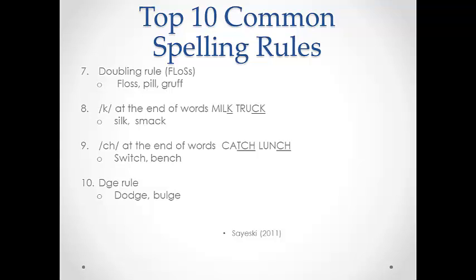Obviously, spelling rules are valuable for teaching children to spell words that follow these regular English rules. As was discussed in the video about C and G, just the rules associated with those two letters opened up understanding of thousands of words. So if we start by teaching children basic rules, we can improve their spelling immensely. The next section will address strategies we can use for words that don't follow basic English spelling rules — irregular words.